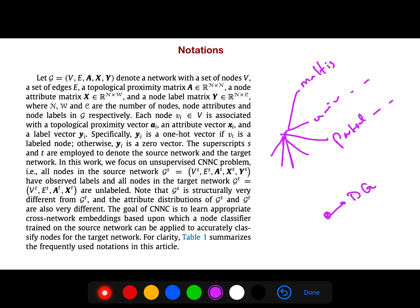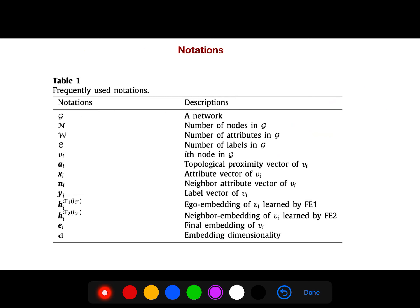This G denotes nodes, edges, adjacency or proximity matrix we call it adjacency, and the attribute matrix X and we have label Y. So A is adjacency, X is attribute matrix. These are the notations. For example, E sub i means final embedding of node V sub i, or Y sub i is label vector of V sub i.